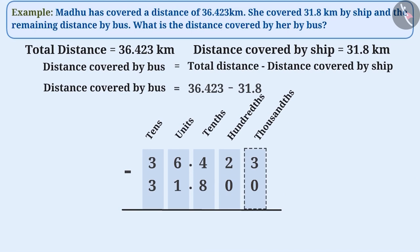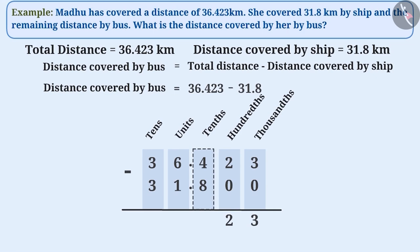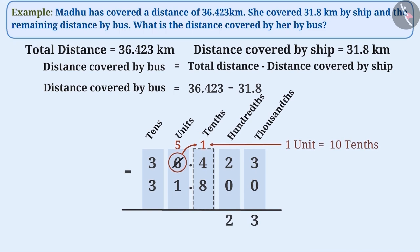By subtracting the digits at the thousandths place, we get 3 at the thousandths place as the result. We cannot subtract the digits at the hundredths place because the digit in the first row is smaller than the digit in the second row. So we will borrow 1 from the tenths place. By doing so, the digit at the tenths place is reduced to 5. 1 tenth is equal to 10 hundredths, so there are 10 and 4 at the hundredths place, that is 14. We can subtract 8 from 14, and we get 6 at the hundredths place as the result.